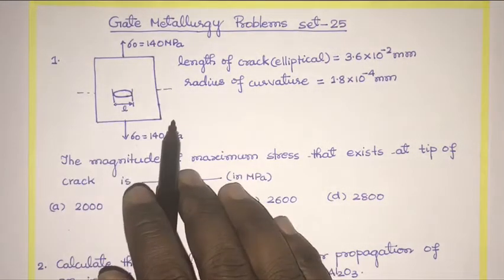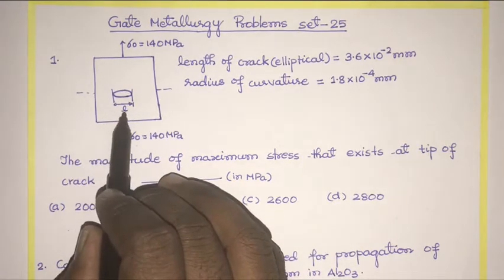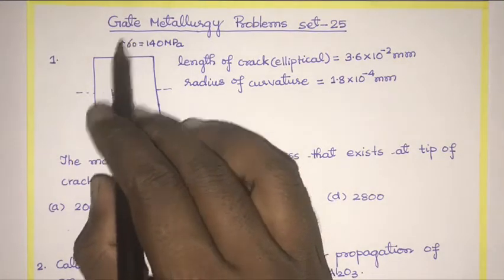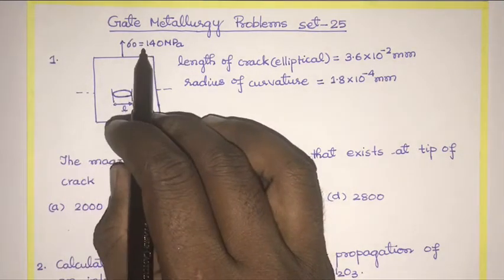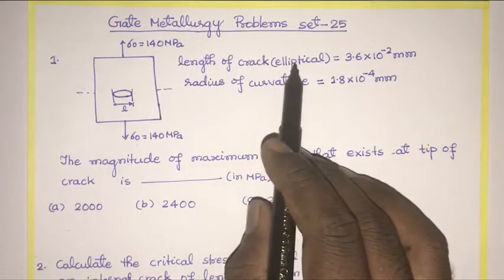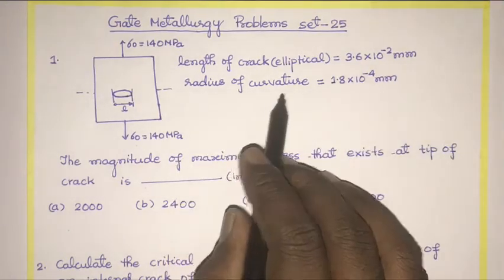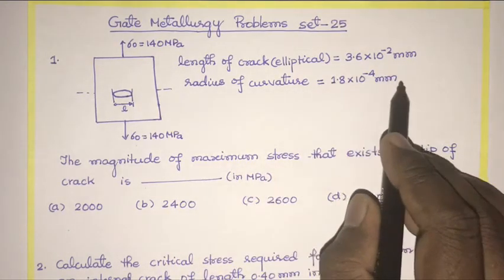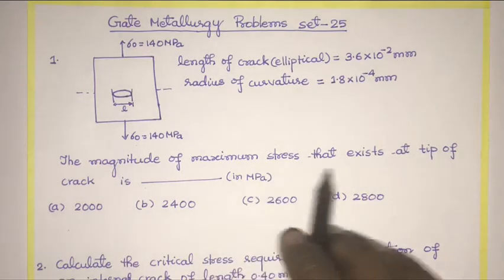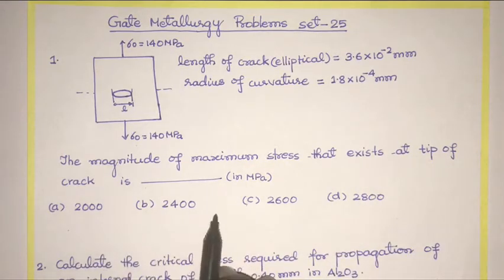This is a specimen in which there is an elliptical crack of length L. The tensile stress acting on the specimen is 140 megapascal. The length of the elliptical crack is 3.6 × 10⁻² mm and the radius of curvature is 1.8 × 10⁻⁴ mm. We have to find the magnitude of the maximum stress that exists at the tip of the crack.